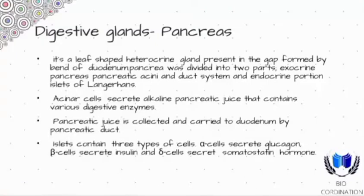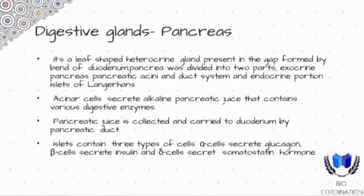Heterocrine means it works in two ways: exocrine secretion is through a duct to a particular organ, while endocrine secretion is released directly into the bloodstream as hormones.